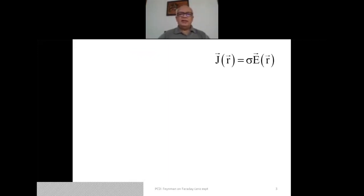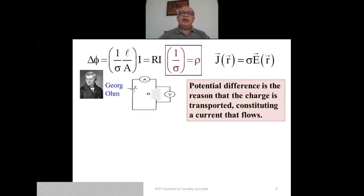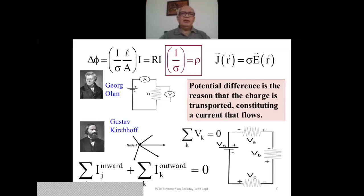You see the relationship J equals sigma E on this slide, and most of you recognize this as Ohm's law. This is a constitutive relation. It tells you that a current flows because there is a potential difference and then charge is transported. The current flows because there is a potential difference — that is what we recognize as Ohm's law.